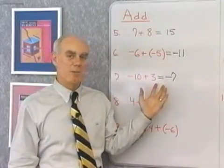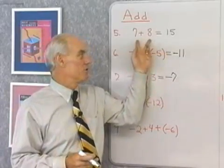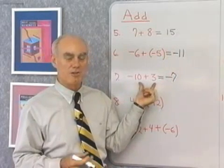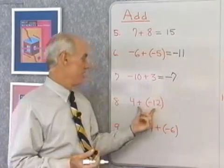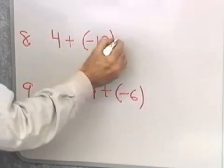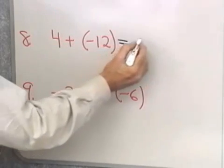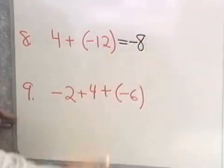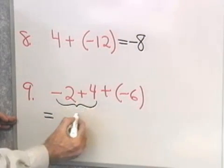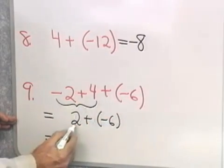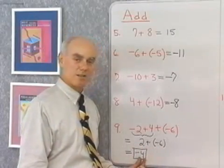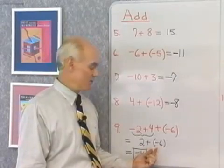I'm now applying the rule without thinking about the number line. Problem 8: 4 plus negative 12 — two numbers with different signs. I subtract the smaller absolute value from the larger: 12 minus 4 is 8, and I use the sign of the number with larger absolute value, which is negative. The answer is negative 8. For the next problem, I have three numbers to add, so I do them two at a time. Negative 2 plus 4 gives 2; then 2 plus negative 6 gives negative 4. These two numbers have different signs, so I subtract absolute values to get 4, and since the larger absolute value is negative, the answer is negative 4.